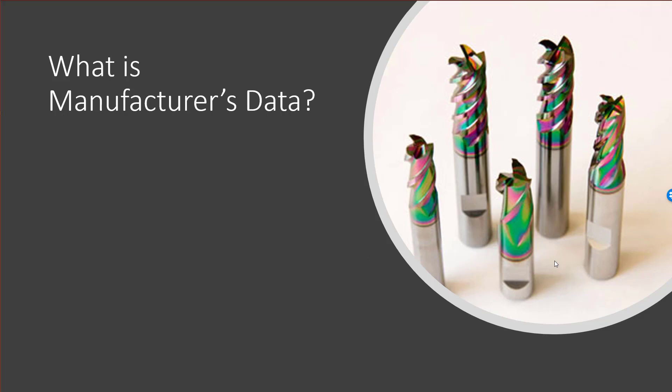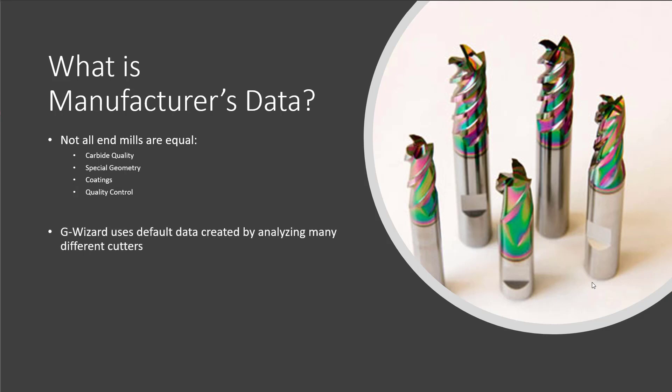What is manufacturer's data? Not all end mills are created equal. They come in a wide range of styles and prices, varying in the quality of carbide used. They can have special geometry requiring more grinding, which increases cost. Coatings are a big part of end mill performance, and fancier coatings are more expensive. Quality control can also add to the cost. I go into a lot of detail on how to choose the best end mills in the bonus material at the end of the video.